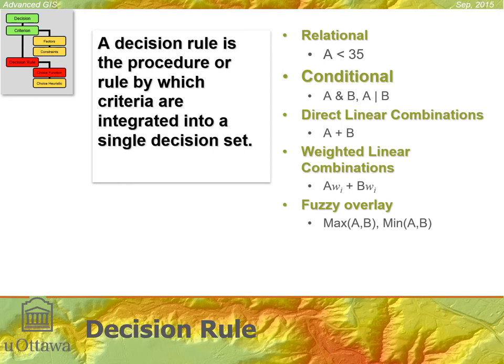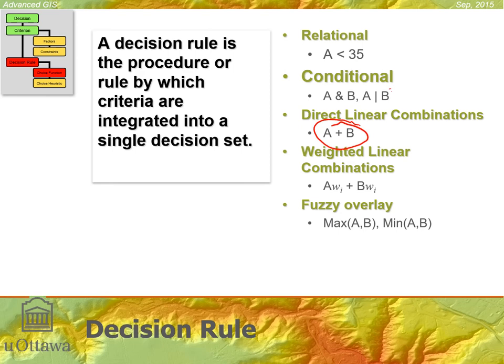Then we have our decision rule — how we combine the different factors together. For relational operations we can use Boolean conditional operators: AND, OR, NOT, exclusive OR. We have linear combinations such as A + B using raster layers as map algebra. We have weighted linear combinations where each factor is multiplied by a weight before being summed. We even have fuzzy approaches like fuzzy AND and fuzzy OR.